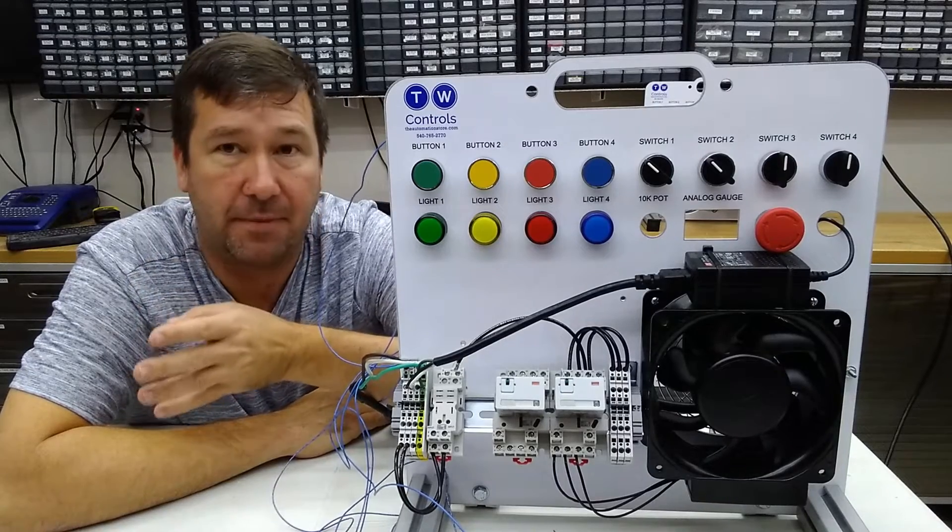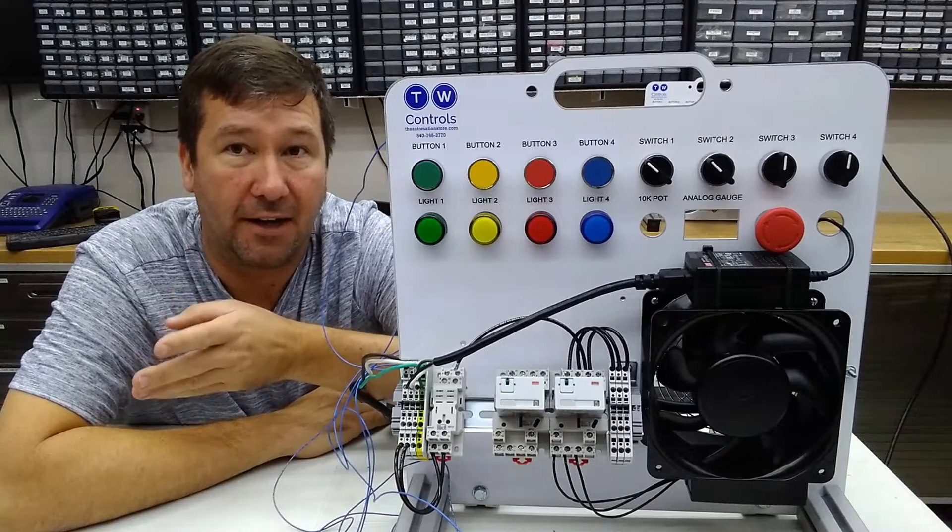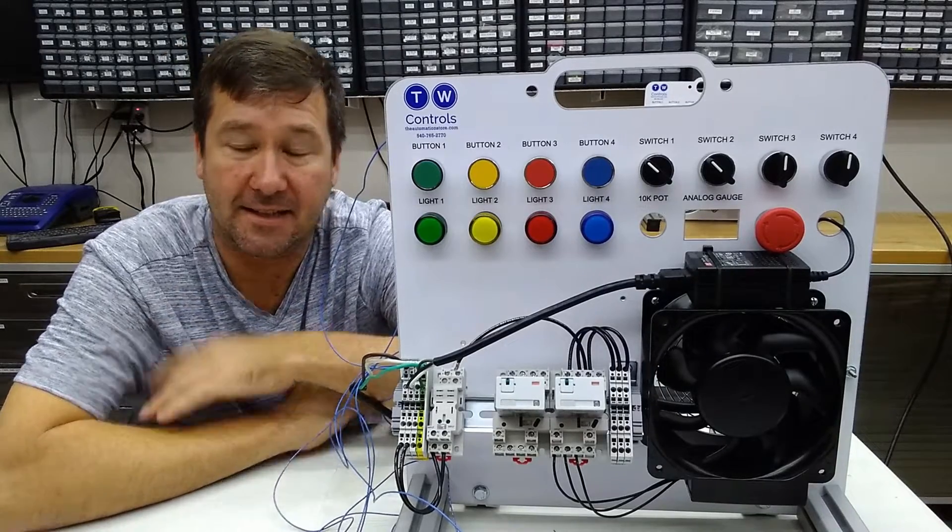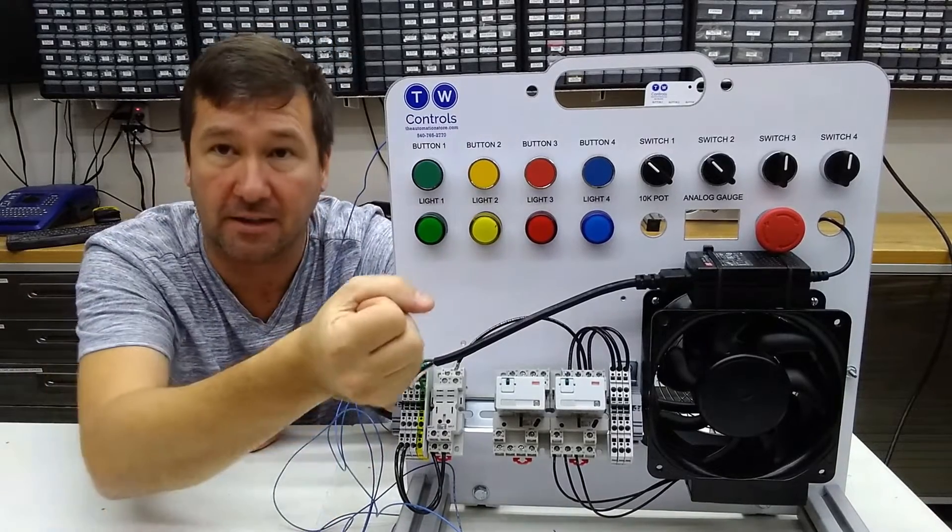Now there's one other very common type of control circuit, and that is called a hand-off-auto. And what that means is you have a hand position, which means you manually are going up and running the load.